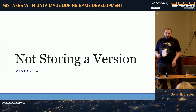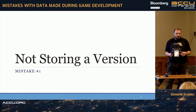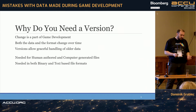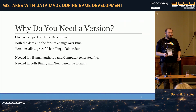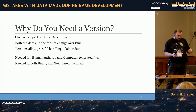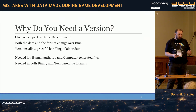The first mistake I've seen is not including a version number in files, or not enough version numbers in files. Why is this a problem? Change is one of the only consistent things in game development. Both the data that you store and the format that you store it in changes over the course of a single game's development. Including a version field will make it much easier to manage the data, or at least give a good error message saying the thing you're trying to load is completely out of date.